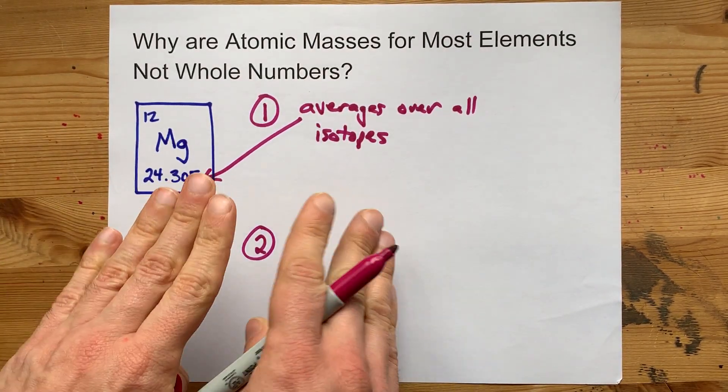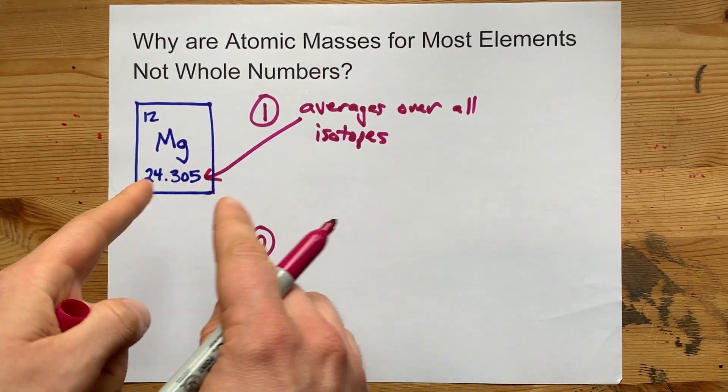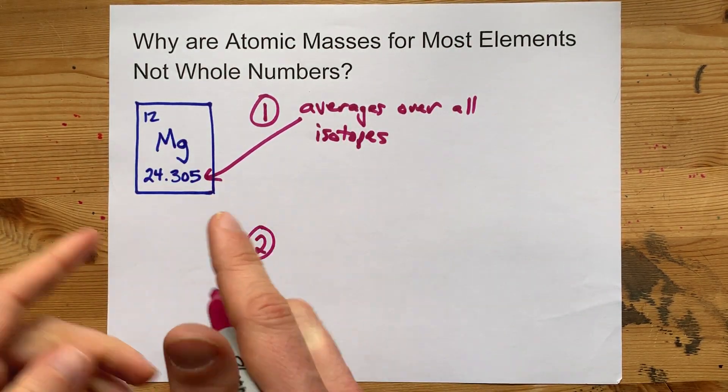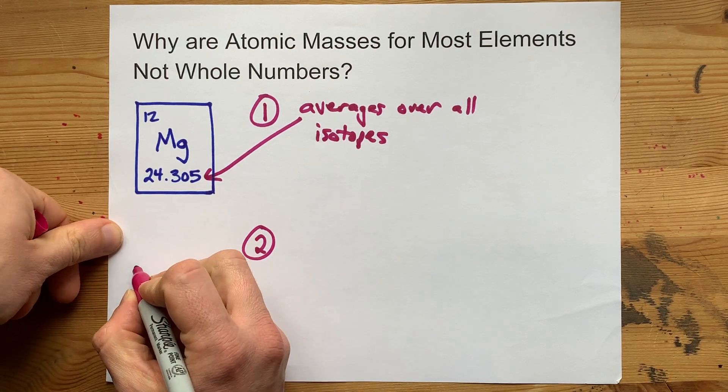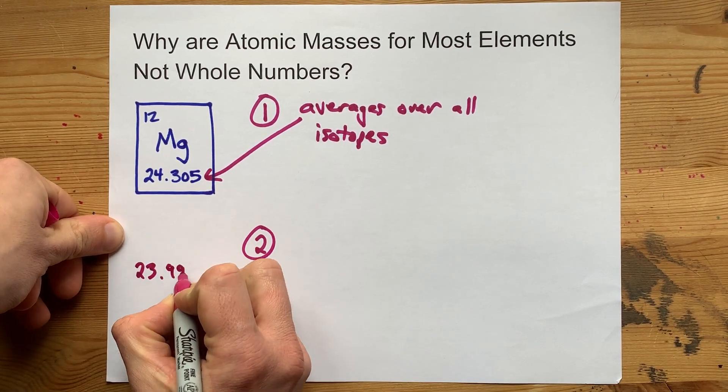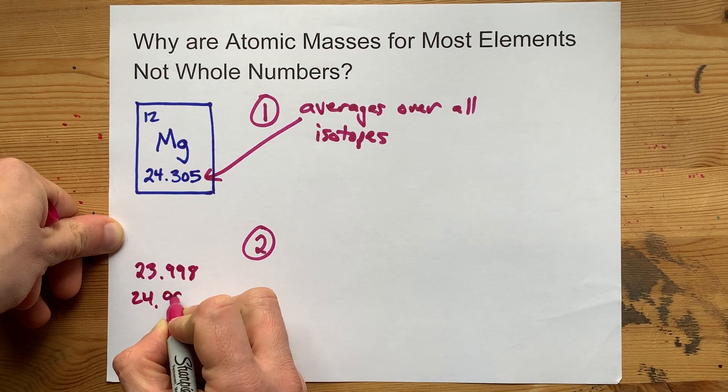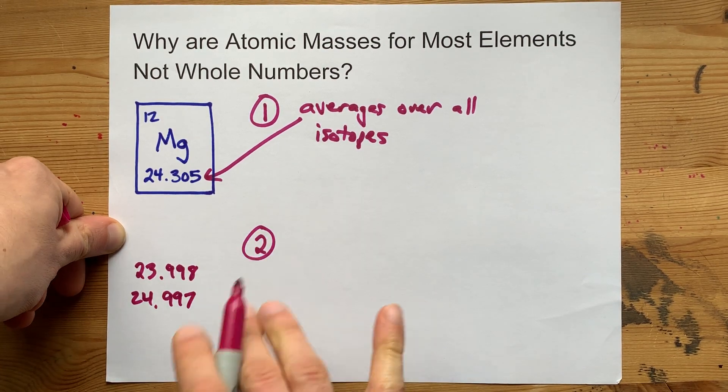But I will point out that even when I say some magnesiums weigh 24 and some weigh 25, it's actually more like some of them weigh 23.998 or 24.997. I'm making those numbers up.